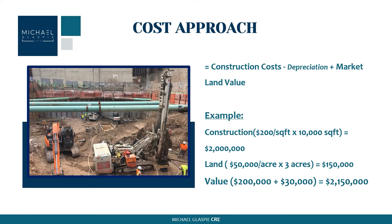For example, let's say the construction costs were $200 a square foot and the building size was 10,000 square feet — so the construction cost alone would be $2 million. For the land, let's say it was $50,000 an acre and there were three acres, giving a land valuation of $150,000. Adding $2 million plus $150,000 gives you $2,150,000 — that is the cost approach valuation for this example.